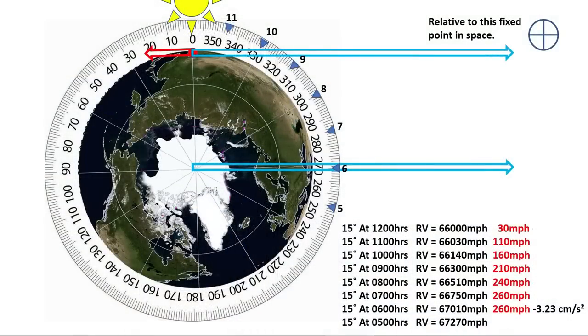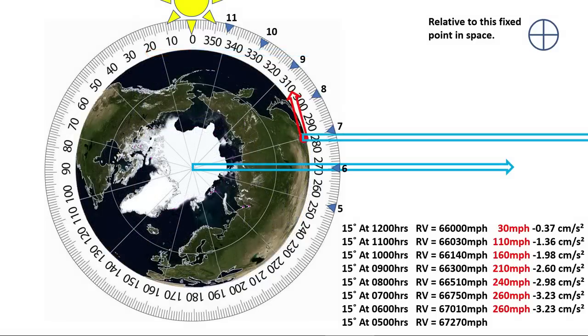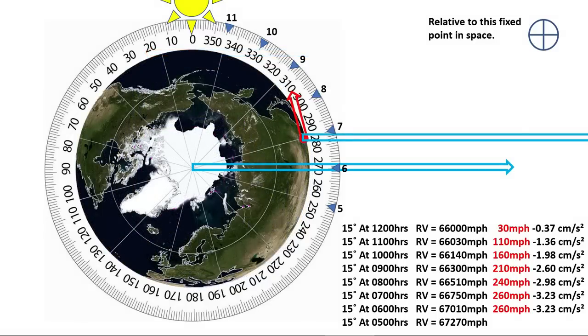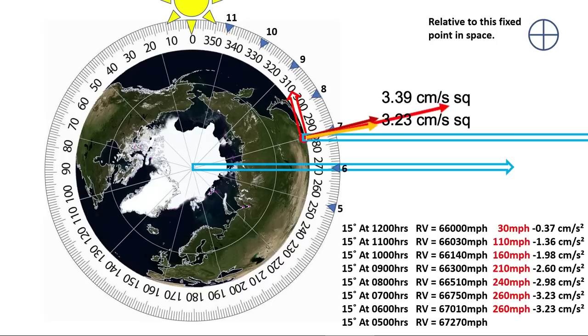As we move forward each hour, your acceleration rate changes. We now need to add the 2 acceleration vectors for the 0700 hours point. The first is for the centripetal acceleration for just the rotation, 3.39 cm per second squared. The second, in yellow, is the direction on you due to decelerating on the journey around the sun, that's 3.23 cm per second. Adding the vectors, the total acceleration on you is 6.6 cm per second squared at this point, at 0700 hours.